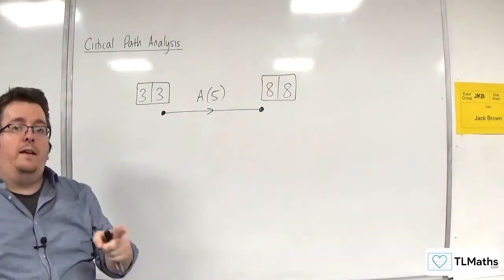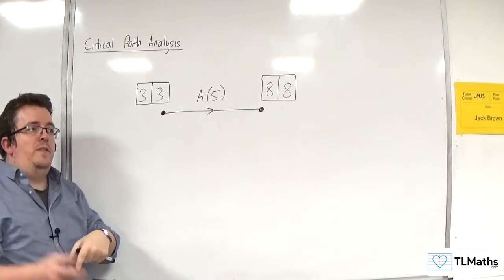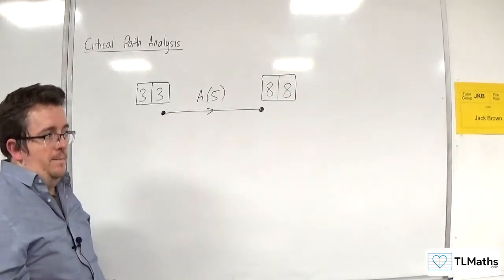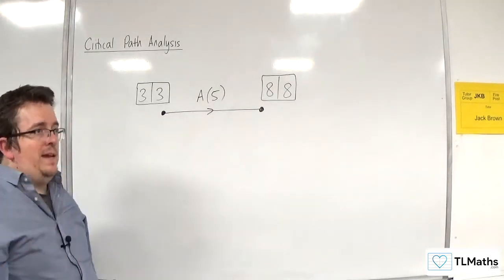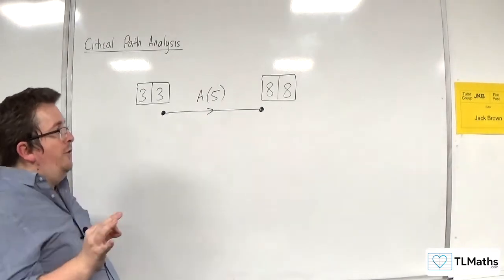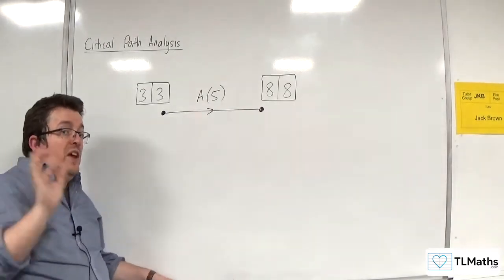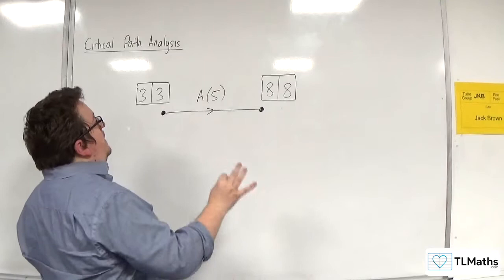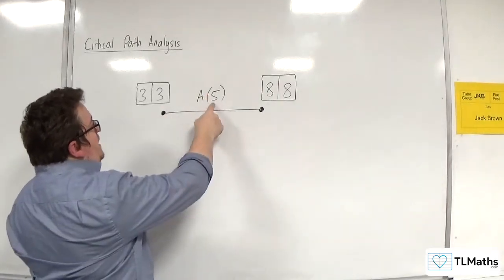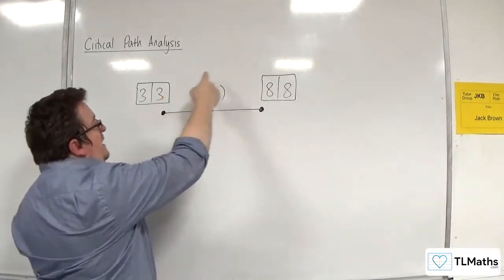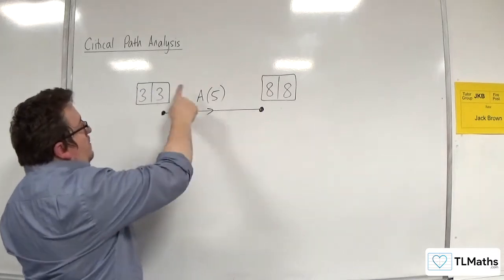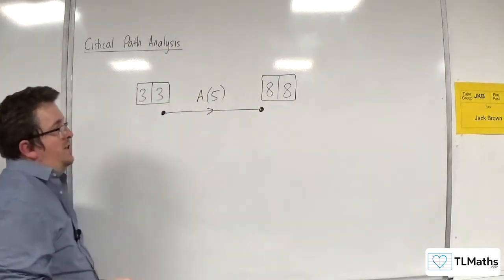Now, that isn't always a situation that leads to a critical activity, so you've got to be a little bit careful. The reason why I know that this is definitely a critical activity is because the duration goes from 3 to 8. So 3 plus 5 is 8. So I know that A is critical.